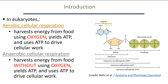When we need energy to do something, for example active transport, we're going to break these bonds. When we break that bond, energy is released. Once we break that bond, we go from ATP to ADP — adenosine diphosphate.